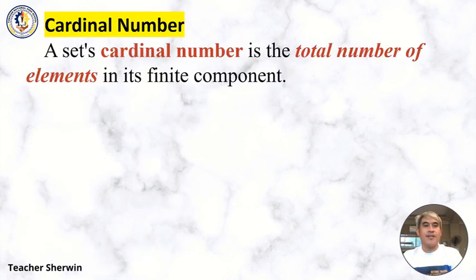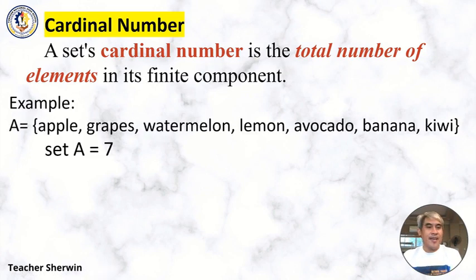So what is cardinal number? A set's cardinal number is the total number of elements in its finite component. So I mean to say total number of elements, you're going to count it.